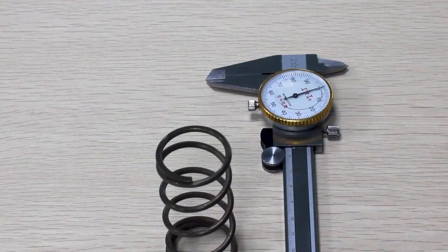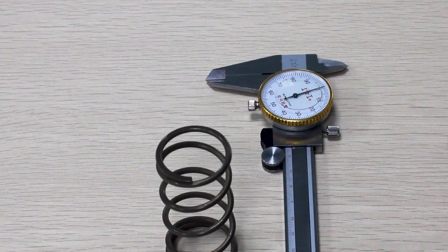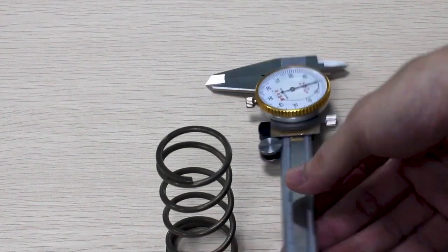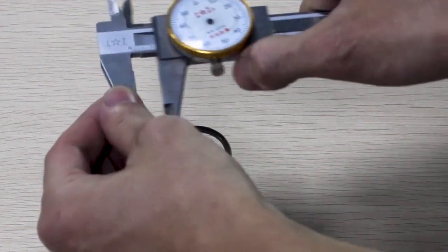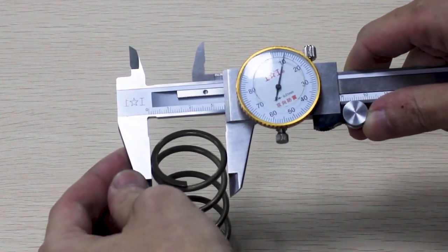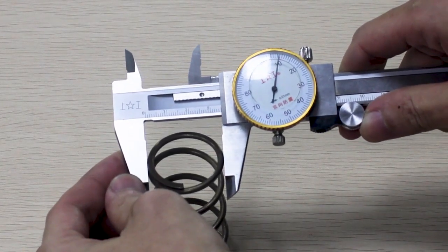Next, we will measure outside diameter, commonly referred to as OD. When possible, it's best to measure the outside diameter in the middle of the spring because the end coils tend to run larger. For this spring, it's 35.1 millimeters.